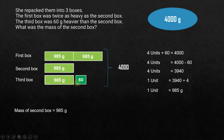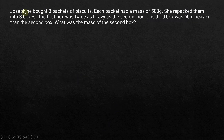This is how we solve the problem using models. Now we'll also solve the same problem using algebra so we can compare, and you can pick whichever method is easier for you. We have the same problem: Josephine bought eight packets of biscuits, each with a mass of 500 grams, repacked into three boxes.